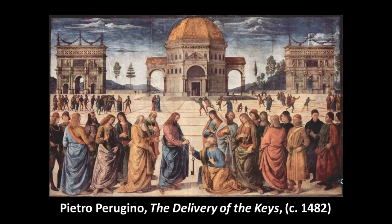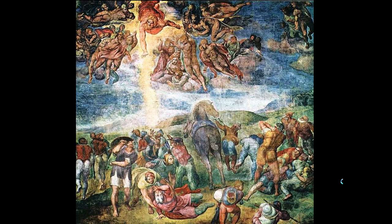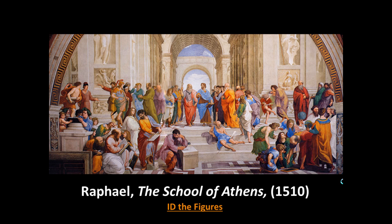Another Sistine Chapel painting is the Delivery of the Keys — commissioned by the pope, of course, depicting Jesus giving the keys of the kingdom to Saint Peter, the foundation of papal authority. In the background you can see perspective and Renaissance architecture: a Roman triumphal arch, domes, and columns imitating Greco-Roman design. One of Michelangelo's later paintings, the Conversion of Saul, moves a bit beyond the Renaissance — slightly less balanced and more chaotic. And of course the School of Athens remains the epitome of Renaissance classical art.